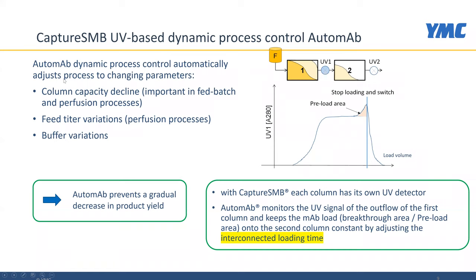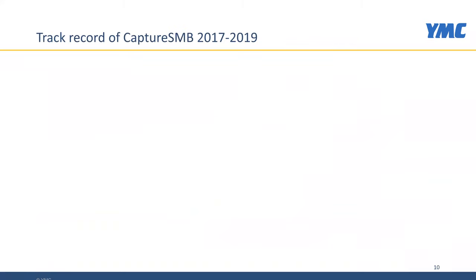AutoMap can account for column capacity decline, feed titer variations, and buffer variations, and it prevents a gradual decrease in product yield. It works by impacting the interconnected loading time—whenever the columns are loaded in series and the threshold is reached, the UV-based controller stops the interconnected loading without user interaction. This software algorithm influences process parameters, namely the interconnected loading time, and that needs to be considered in process validation.